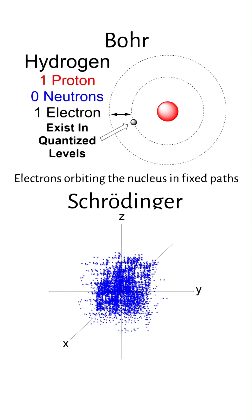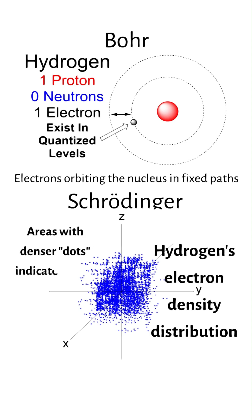These orbitals represent probabilities rather than definite paths, introducing the concept of electron density distribution. In this model, areas with denser dots indicate higher probabilities of locating an electron, shifting from predicting exact locations to calculating likelihoods.